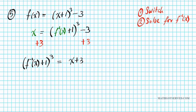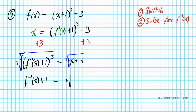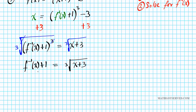To address the third power, we use its inverse — the third root — so we take the third root of both sides. On the left side, the third root cancels the third power, leaving us with f inverse of x plus one equals the third root of x plus three. Now we isolate f inverse of x by subtracting one from both sides, yielding f to the negative one of x equals the third root of x plus three, minus one. There goes the inverse of our function f.